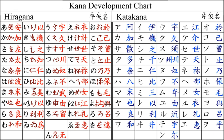Due to the limited number of phonemes in Japanese, as well as the relatively rigid syllable structure, the kana system is a very accurate representation of spoken Japanese.